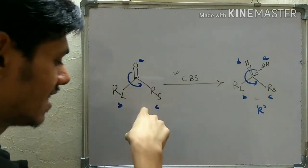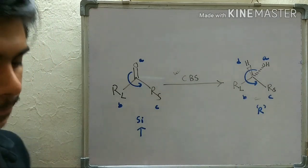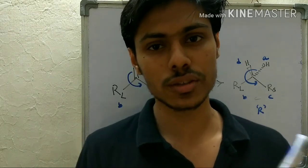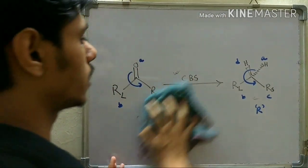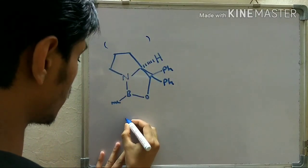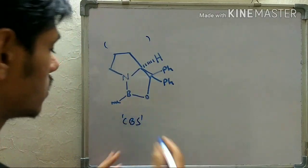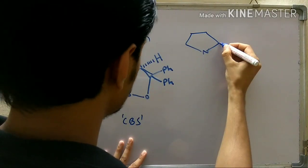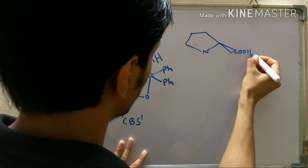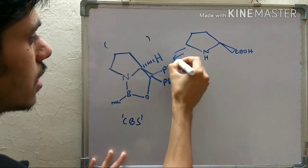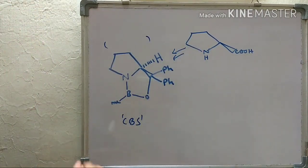Now I will discuss the mechanism and the transition state through which the reaction proceeds. This is the standard Corey-Bakshi-Shibata CBS catalyst used in the reaction, and it is derived from L-proline. This is the structure of L-proline from which it is derived. There are several synthetic steps — you don't need to know those for this discussion; you can find them in any book.